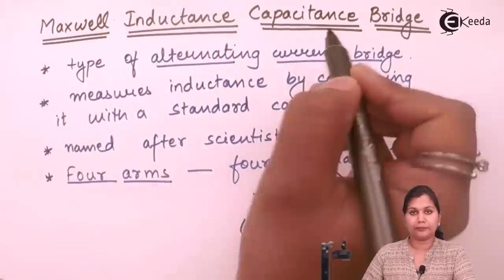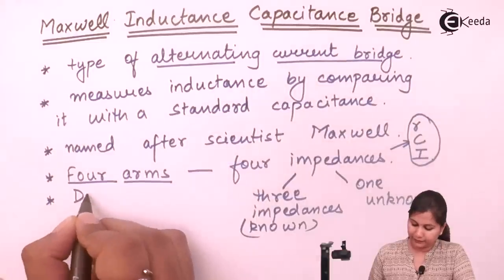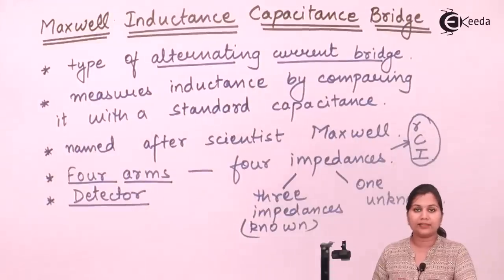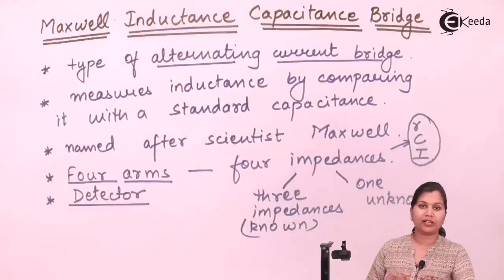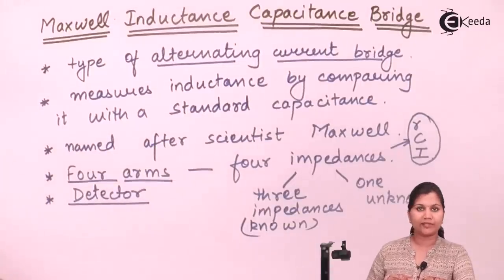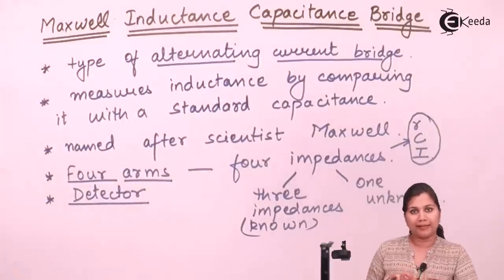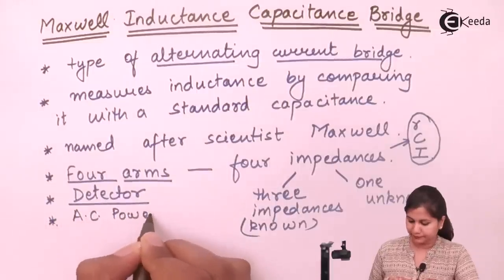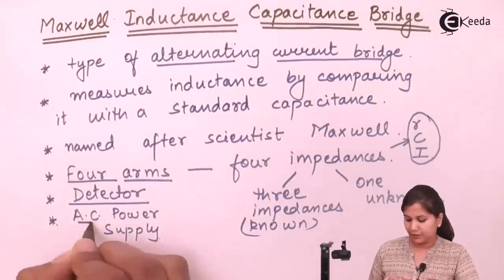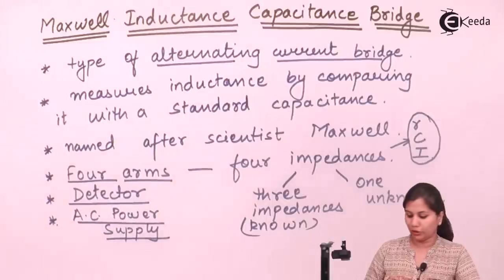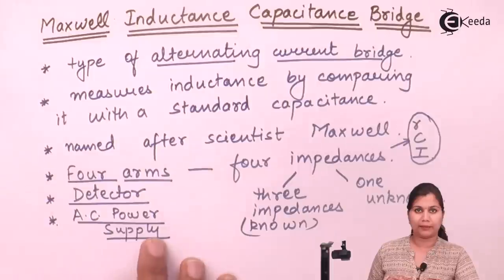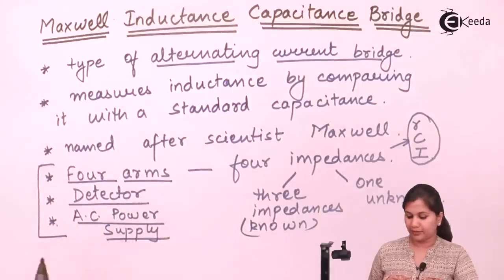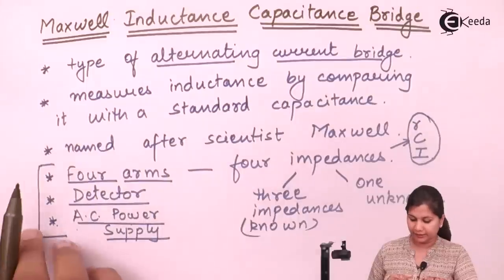There are four arms in the bridge network. We also have a detector, which is used to obtain the balance condition of the bridge. A bridge is balanced when the detector gives a null indication. There is also an AC power supply used to operate the bridge network, providing the voltage and current. In the Maxwell inductance capacitance bridge, we have these three things: the four arms, the detector, and an AC power supply.